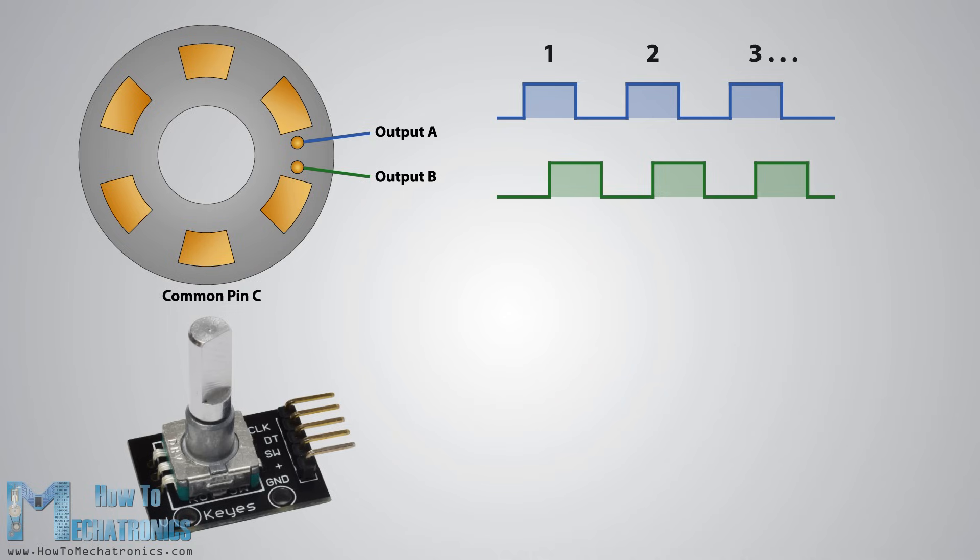However, if we want to determine the rotation direction as well, we need to consider both signals at the same time. We can notice that the two output signals are displaced at 90 degrees out of phase from each other. If the encoder is rotating clockwise, the output A will be ahead of the output B.